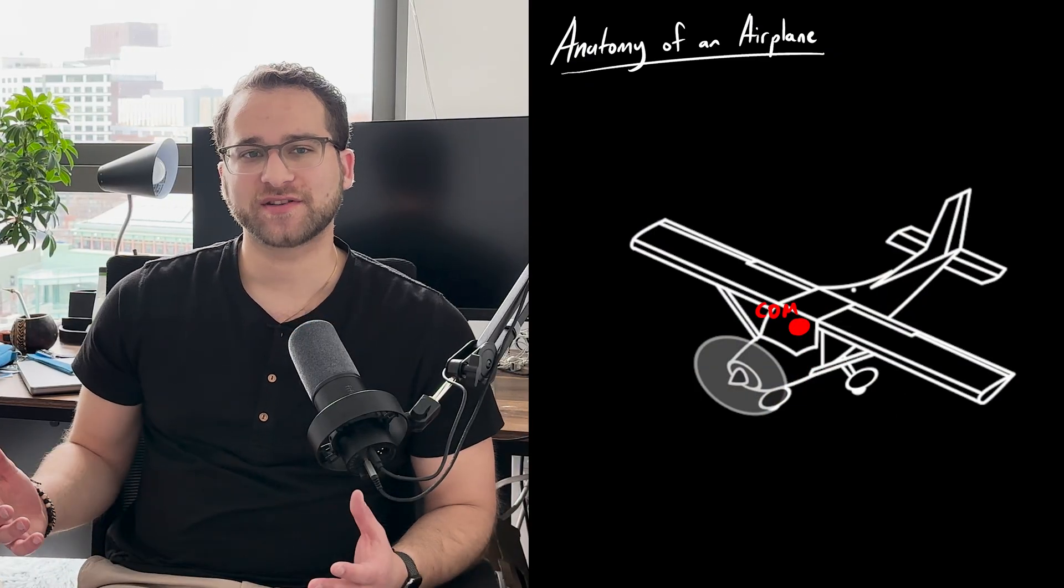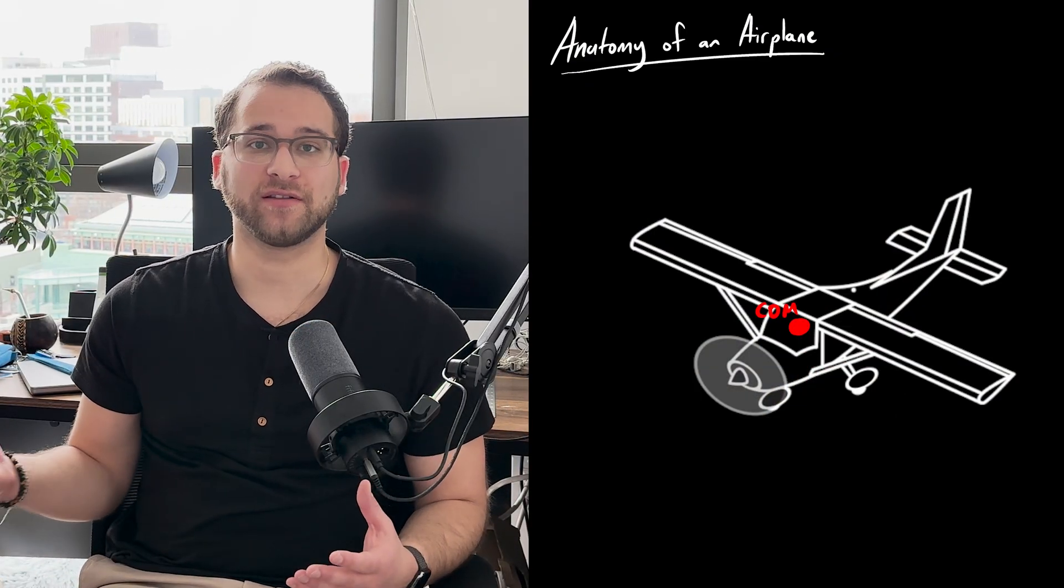So that's how aircraft wings generate lift. But how does the plane actually maneuver and rotate itself? Before I can answer that question, I need to make sure we're all on the same page about the coordinate frames we're going to be using to talk about control. The center of mass defines the origin, and left and right will be from the perspective of a pilot. A plane has 6 degrees of freedom.